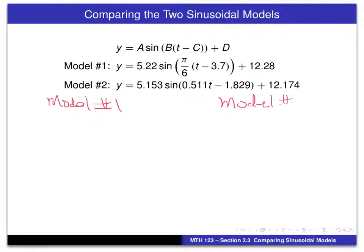And what we're going to do here is write down some information about these two models. Some of which will be pretty easy to pick up. In particular, like the amplitude is easy. In model number one, it's 5.22. In model number two, it's 5.153. So again, a slight difference.